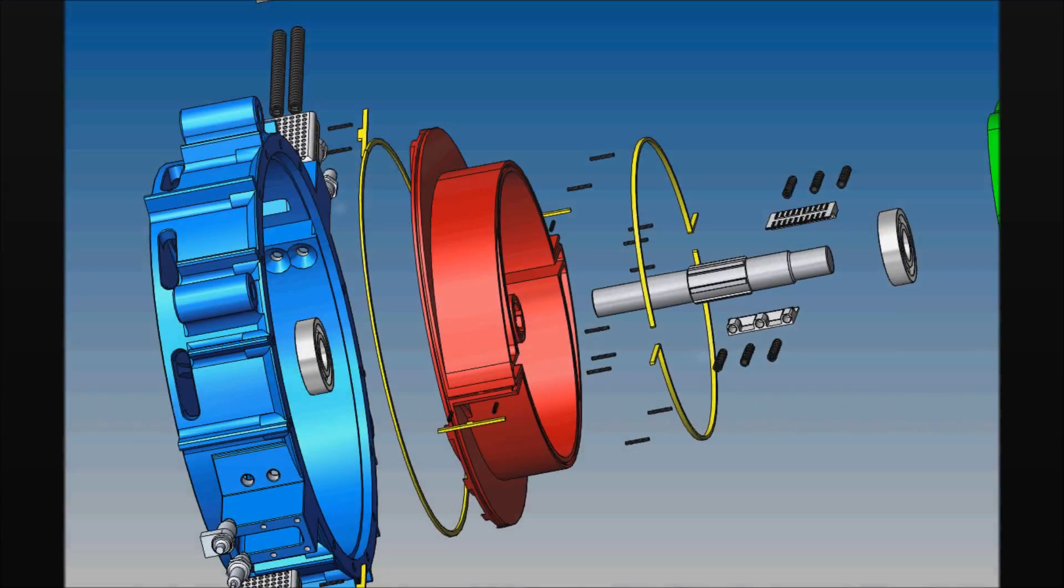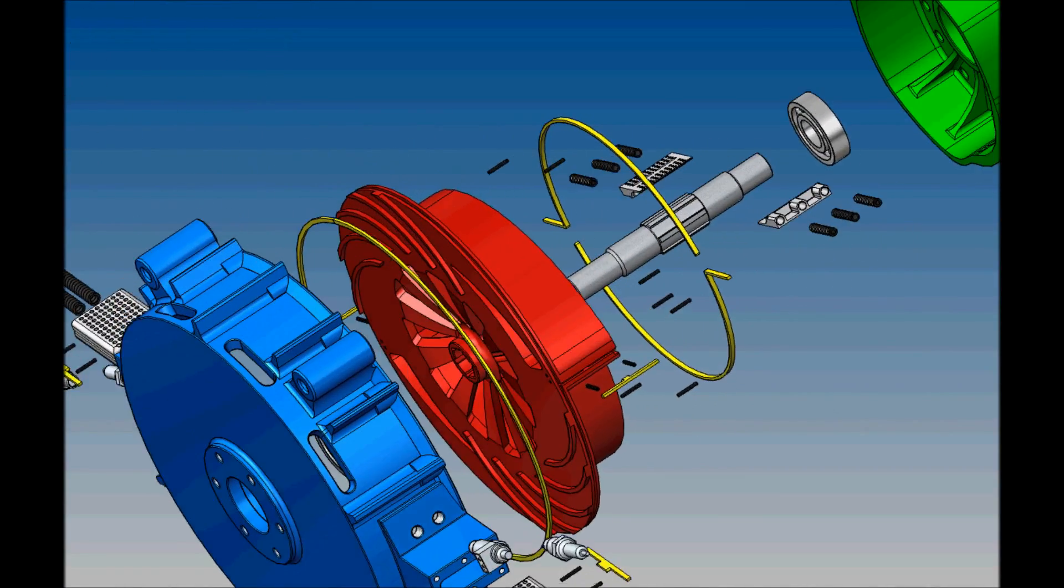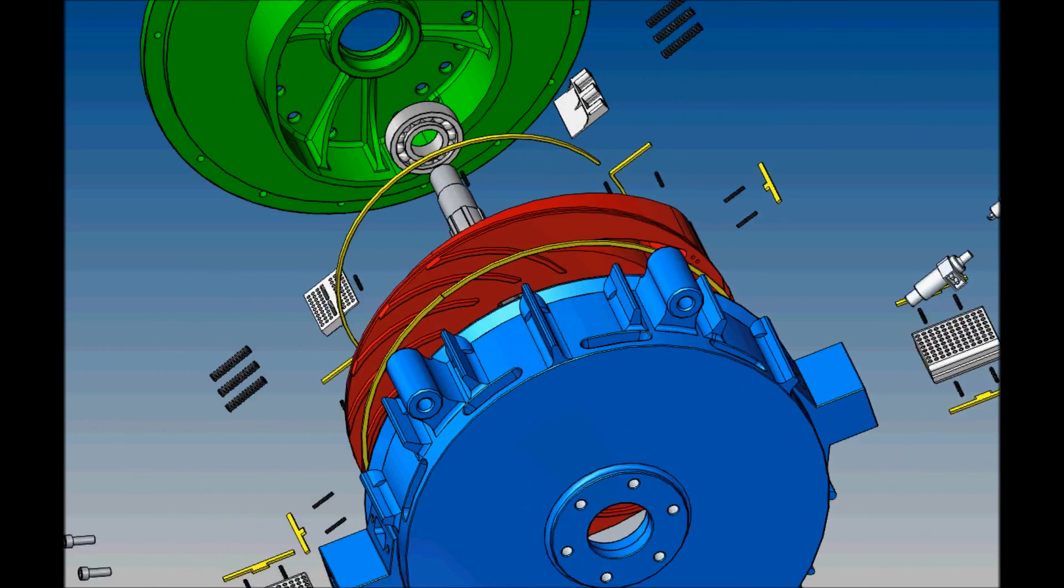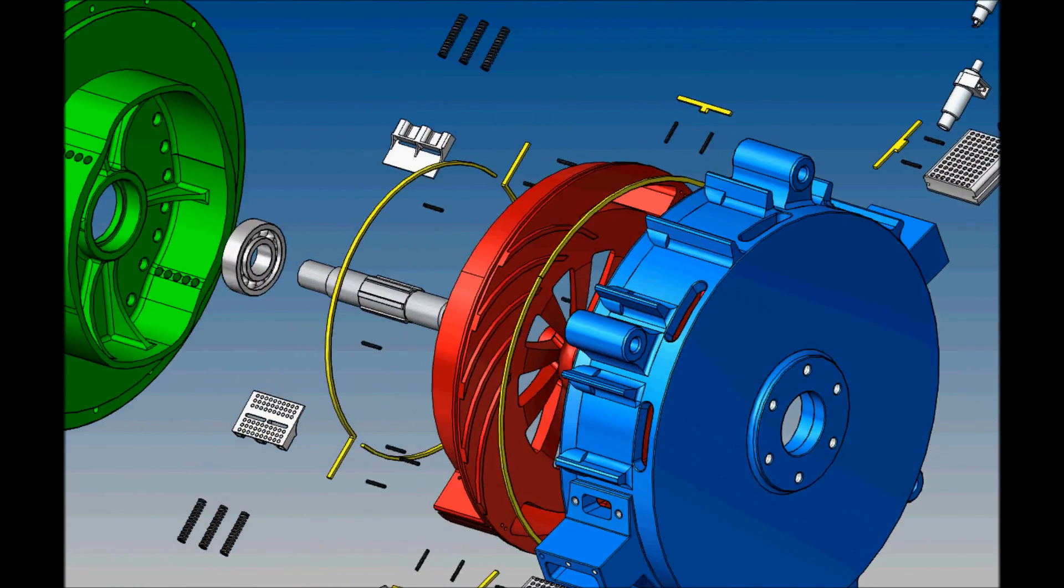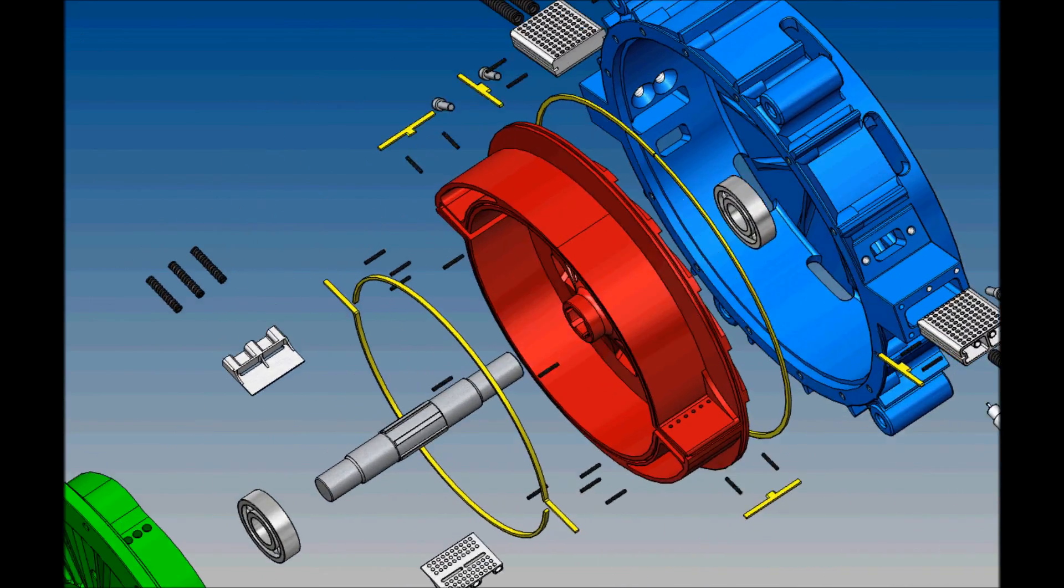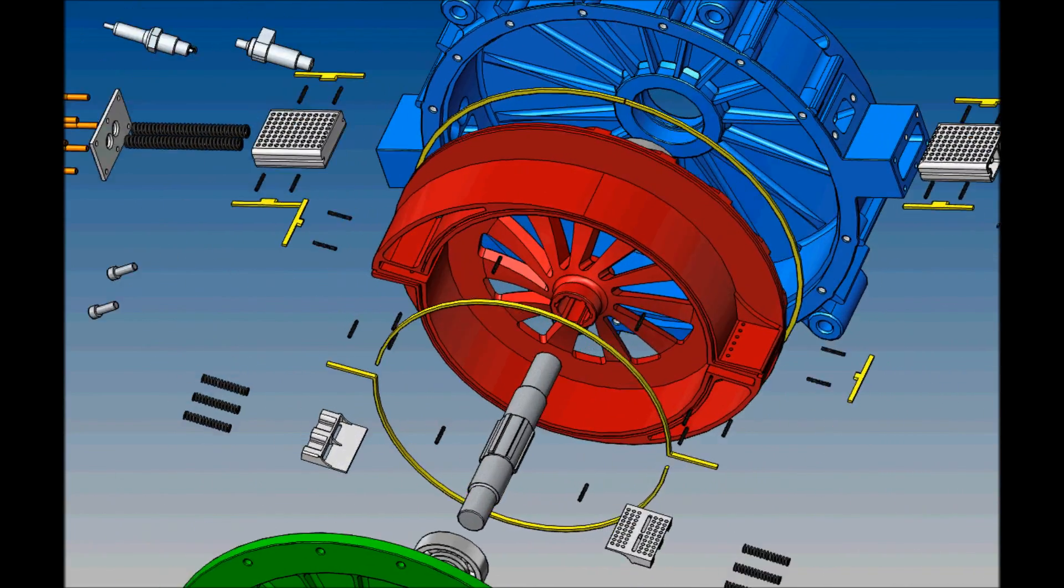The construction of the engine is very simple. The rotor is this red part, yellow elements are gaskets. The engine does not need a starter, oil pump, timing gear, or cooling system.